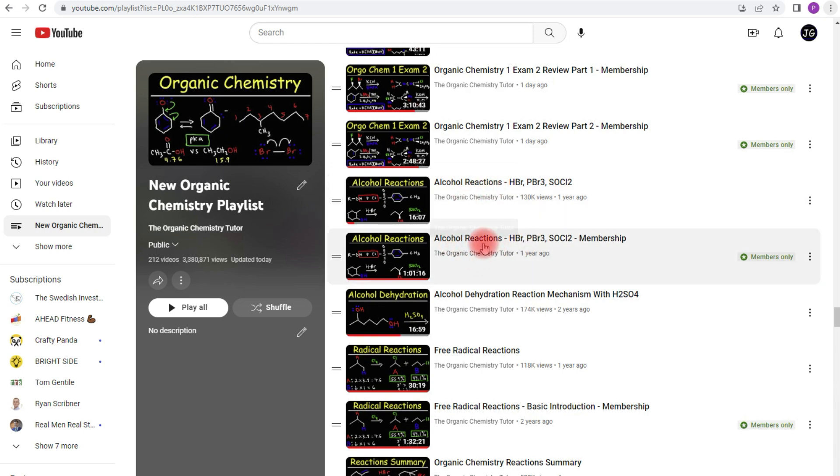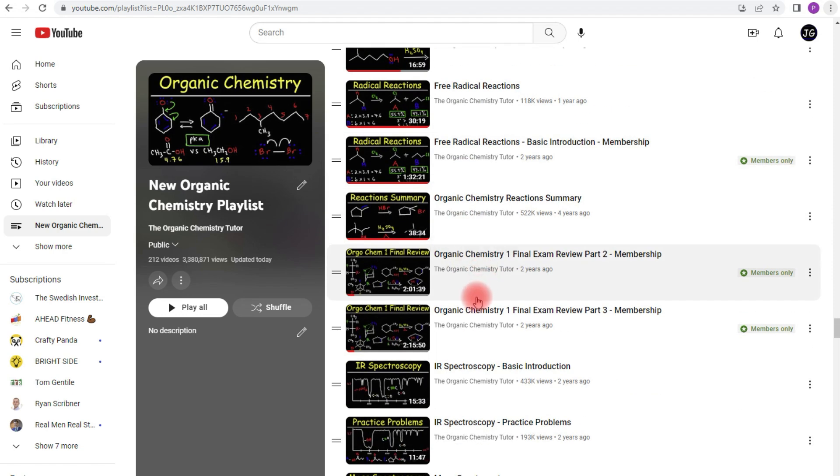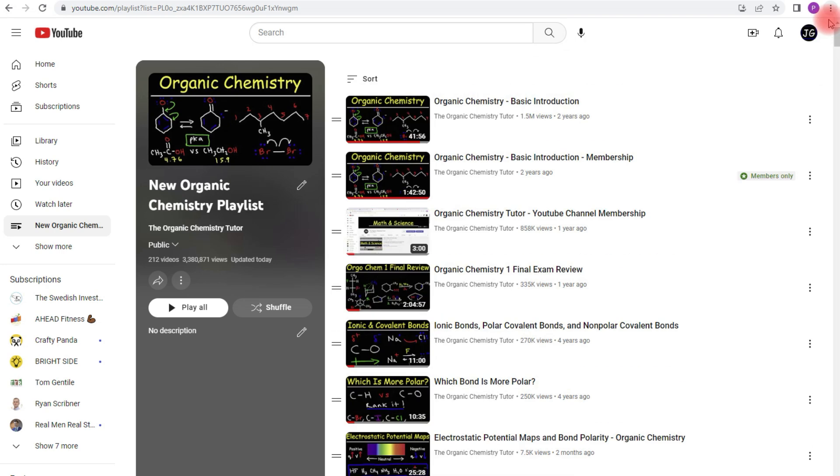In my membership program, you'll get access to alcohol reactions, free radical reactions, and of course, my organic chemistry one final exam review video. The full version is about six hours long, but the first two hours are free. This is the last four hours. To find the first two hours that are free, here it is right here, at the top of the list. So feel free to take a look at that, if you want to know what you're getting, if you decide to join my YouTube membership program. Thank you so much.